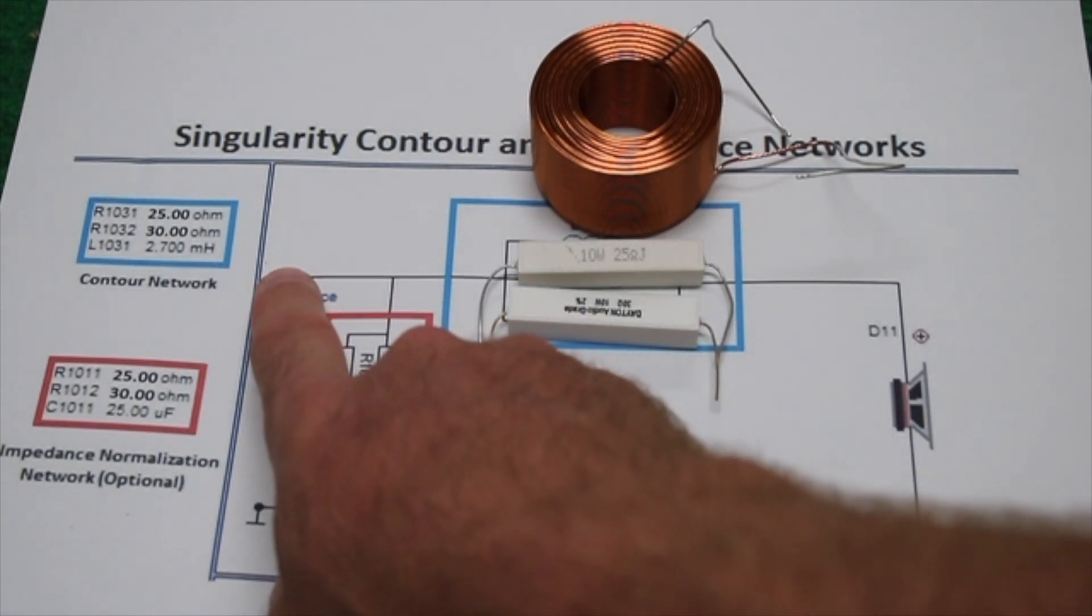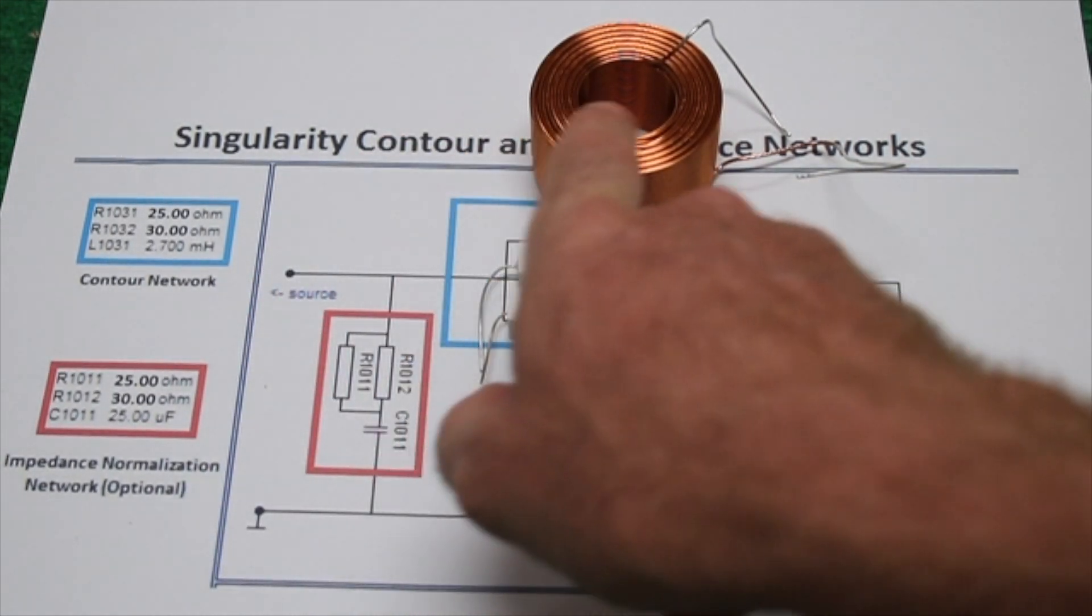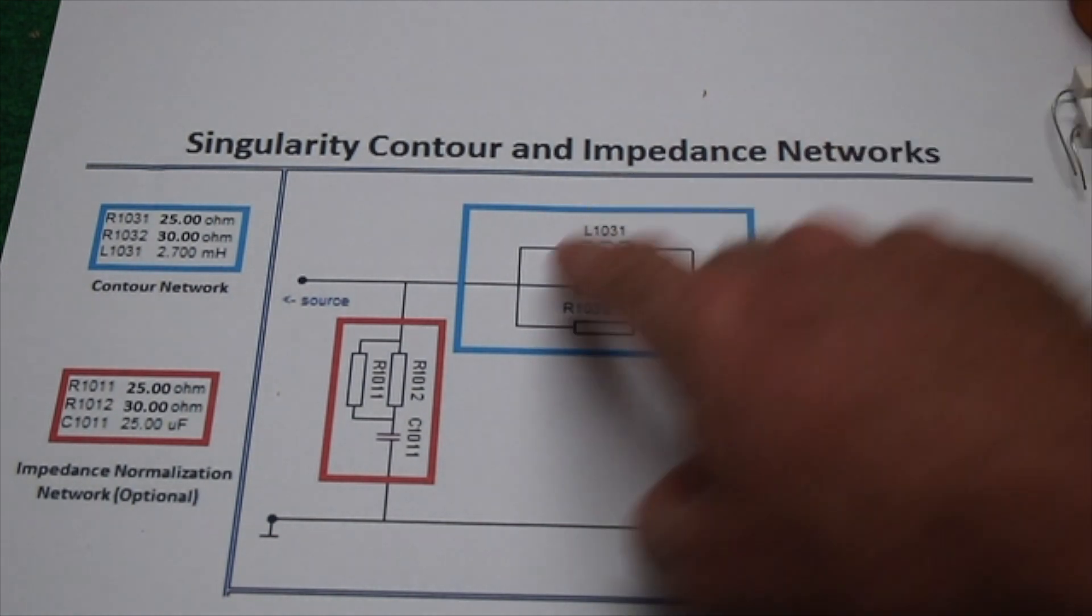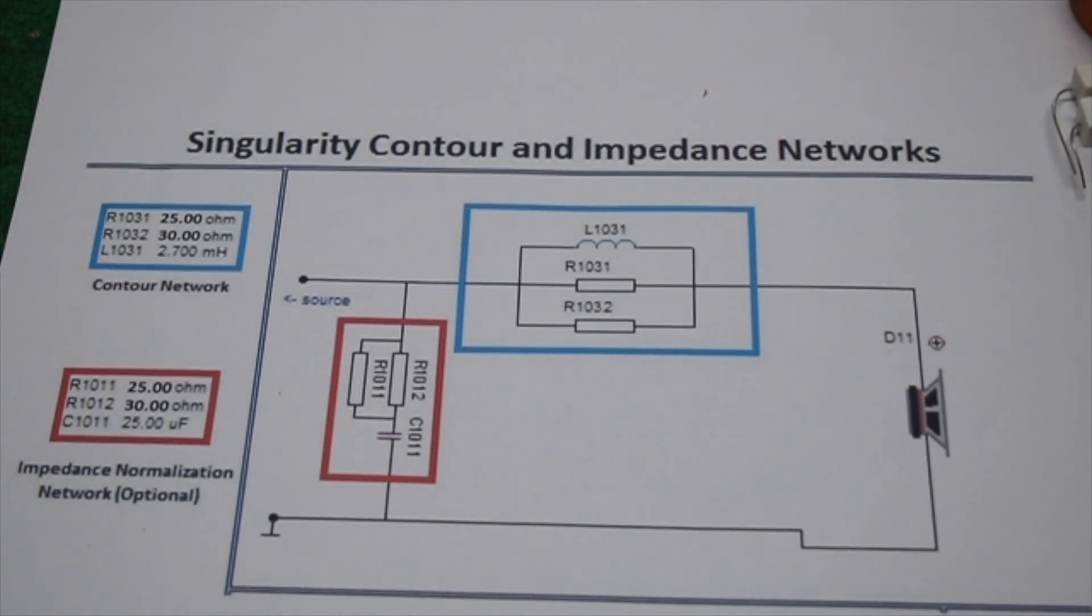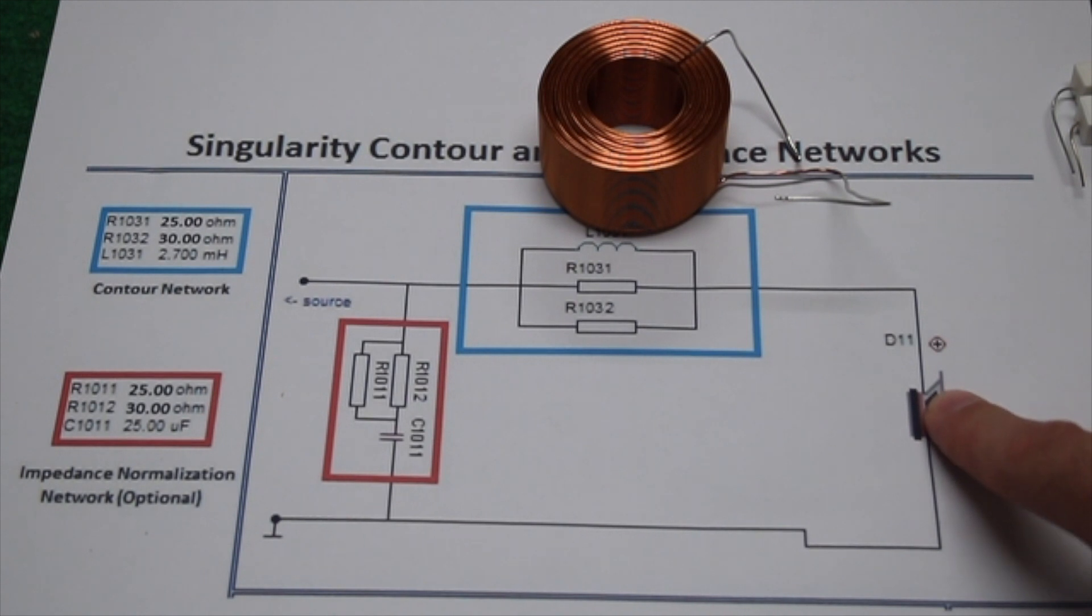This is where the input will come in from the amplifier, and these all three have to connect together, and then they all have to go out together to the positive on the speaker.